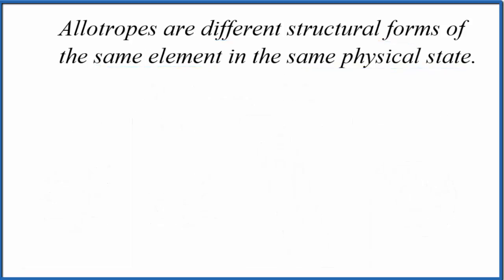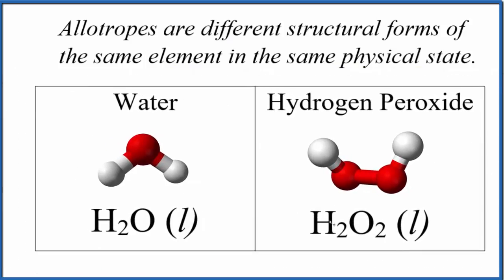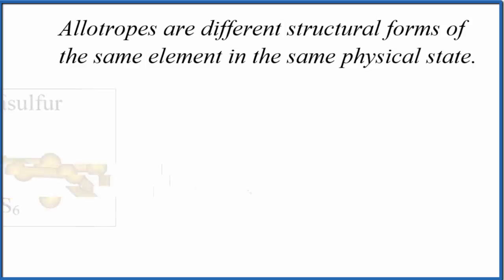So answer this question: water H2O liquid and hydrogen peroxide H2O2 liquid, are these allotropes? Pause and give it a try. Well, they're both liquids so they have the same physical state, and they both are different in terms of their structures. The problem is we have different elements here. Water is not made up of the same element—we have hydrogen atoms and oxygen. Same for H2O2, we have these oxygen atoms but then we have hydrogen atoms. So these aren't allotropes because we don't have the same element making up each structure.